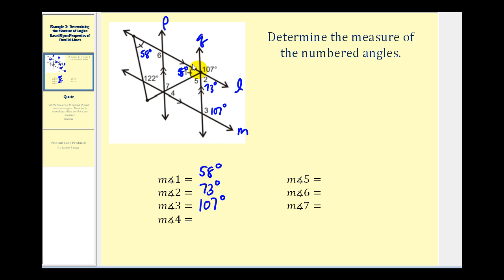Now looking at the parallel lines P and Q, angle one and angle four are alternate interior angles and therefore congruent. So the measure of angle four is also fifty-eight degrees.